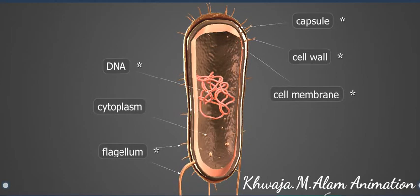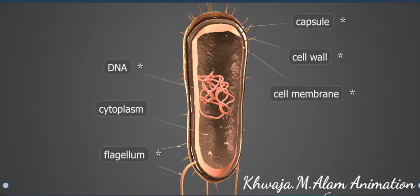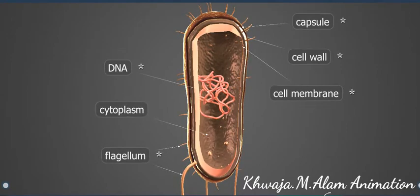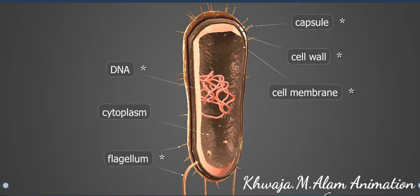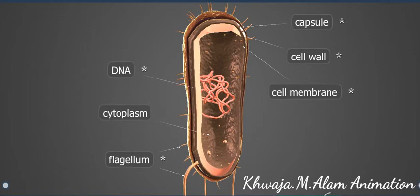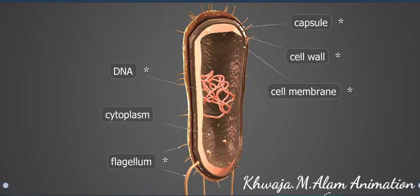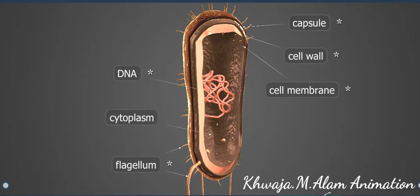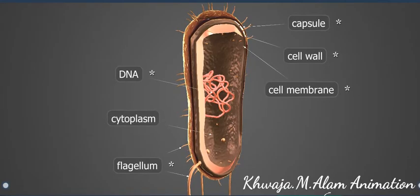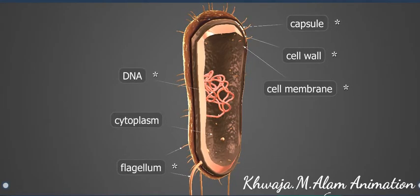Outside the cell wall is the capsule, which is made mainly from polysaccharides. It protects the cell and is responsible for the diseases caused by some bacteria in the host organism.